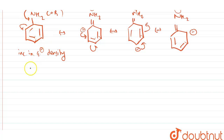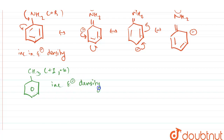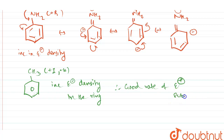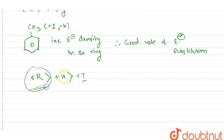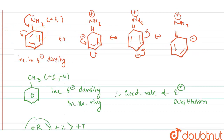Toluene shows plus I effect and plus hyperconjugation effect, both of which increase electron density in the ring, giving a good rate of electrophilic substitution. However, since resonance has higher priority than hyperconjugation and inductive effect, aniline — which benefits from the strong plus R effect of NH2 — will have a higher rate than toluene.